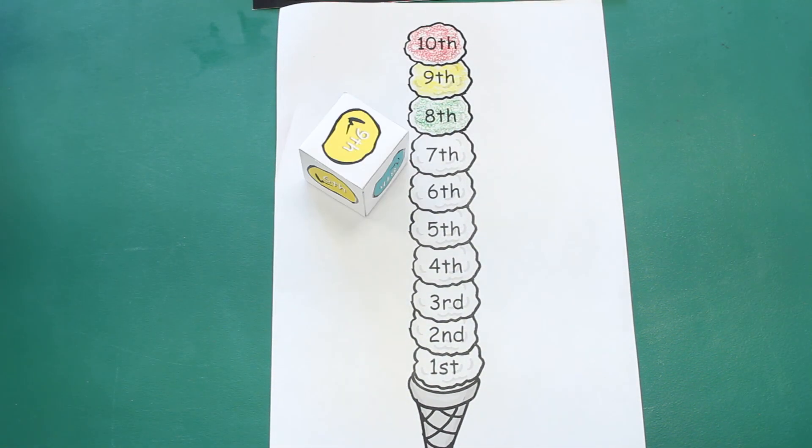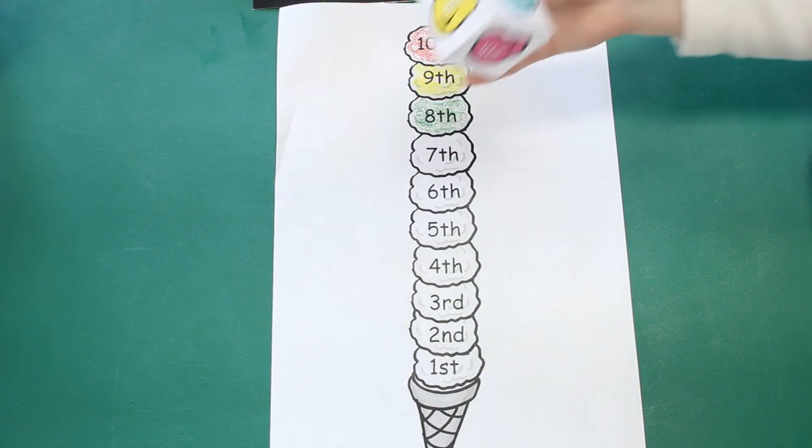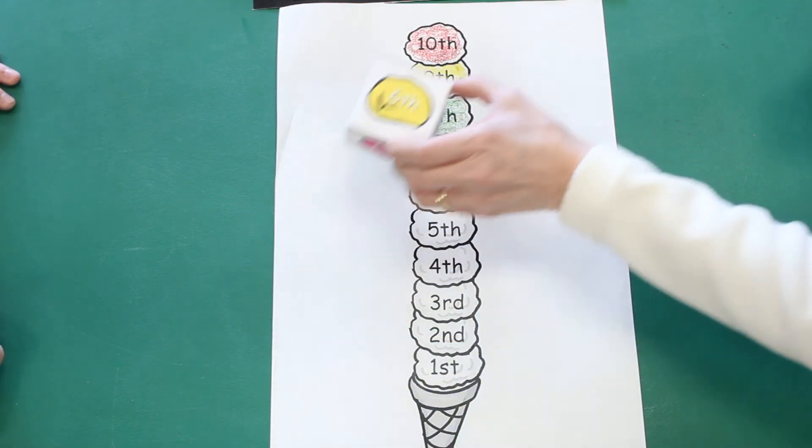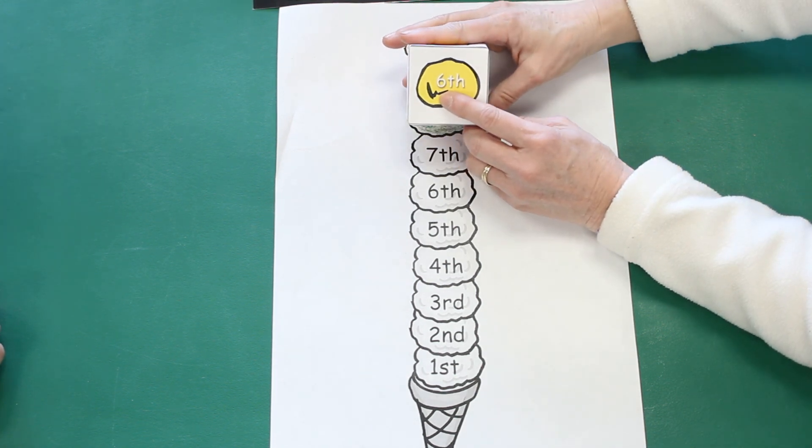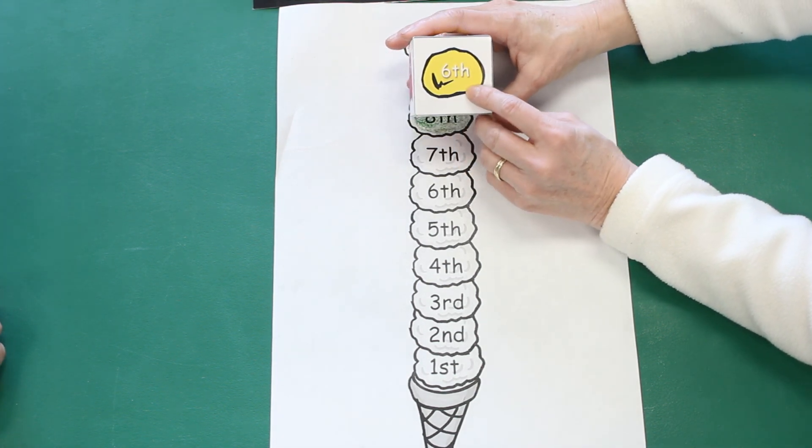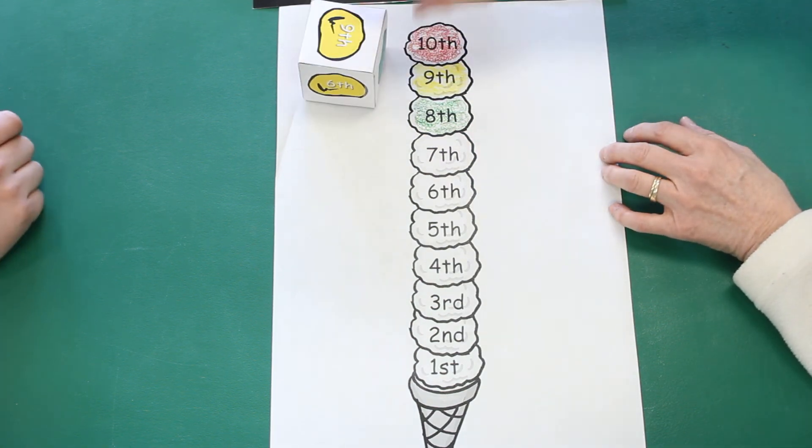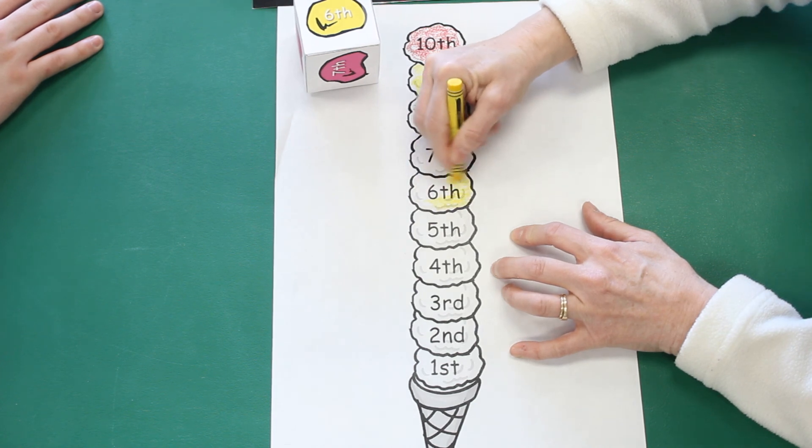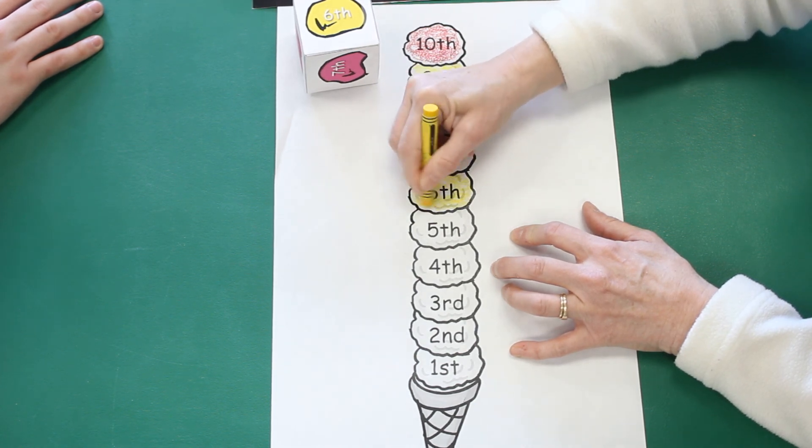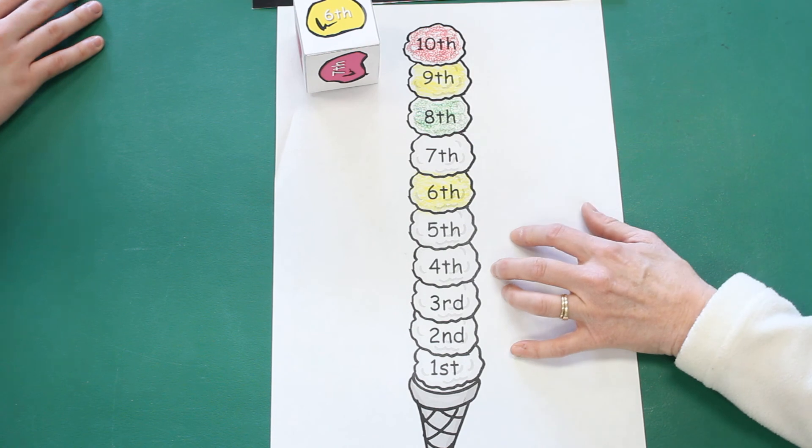All right, Mrs. Reagan's turn. Oh, I have to roll again. Oh, I got sixth. I'm going to color the sixth scoop of ice cream yellow. Oh, the ninth one was yellow too. All right, your turn, Ethan.